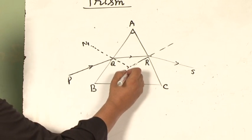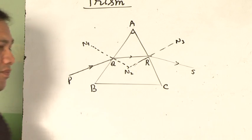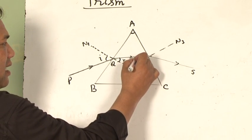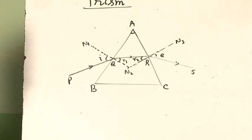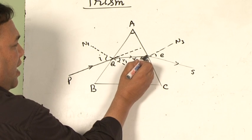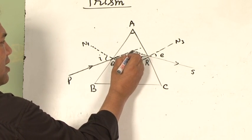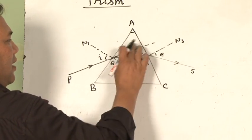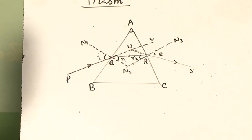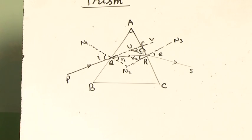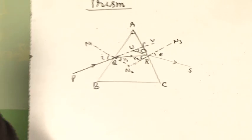The angles are labeled: N1, N2, N3. This angle is angle of incidence i, here is r1, this angle is r2, and this angle is angle of emergence e. If I extend the incident ray PQ and the emergent ray RS in the backward direction, these two rays will meet at a point. This angle between the directions of the incident ray and the emergent ray is called the angle of deviation δ.